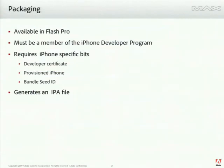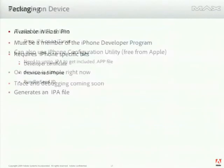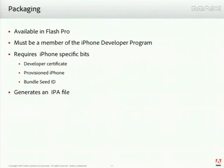These slides are a little bit out of order. These are some of the specific bits that are required. Most importantly, we're actually building native applications, so you need all the native bits and bobs required to build an iPhone application. That means you've got to go sign up for the Apple Developer Program, go get your public keys, go get your private key, get your bundle ID, provisioning certificates, and get your phone provisioned.